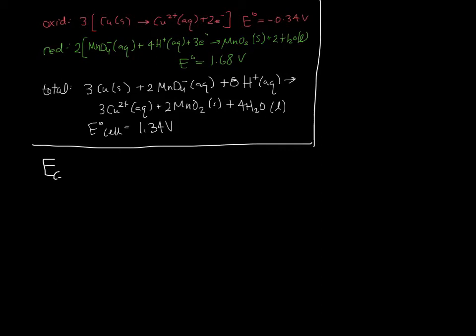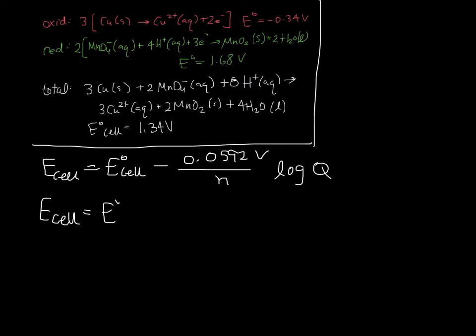We have that the cell potential is the standard cell potential minus 0.0592 volts divided by n times the log of Q. So we need to find Q. The number of electrons total that we have here is 6, so we're going to divide by 6.